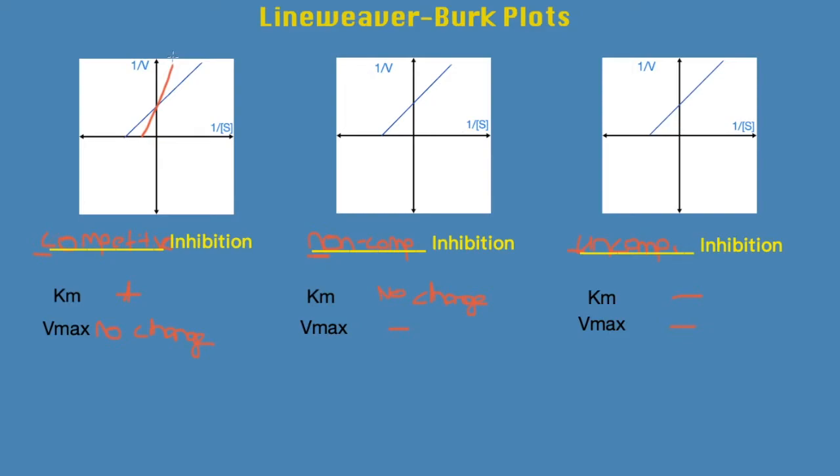And so this is with the inhibitor, the red color is with the inhibitor, whereas the blue is without. And you'll see, so the Km increased, Vmax has no change, so that's what it's going to look like.